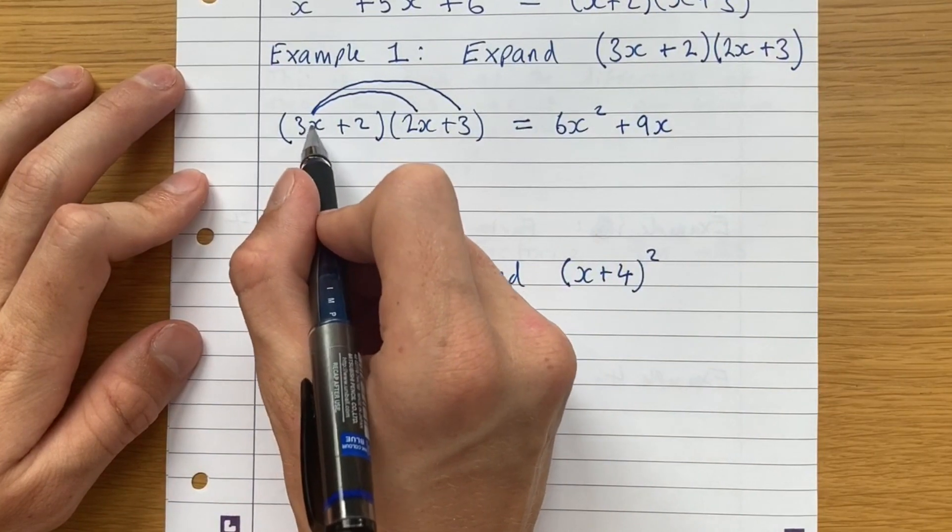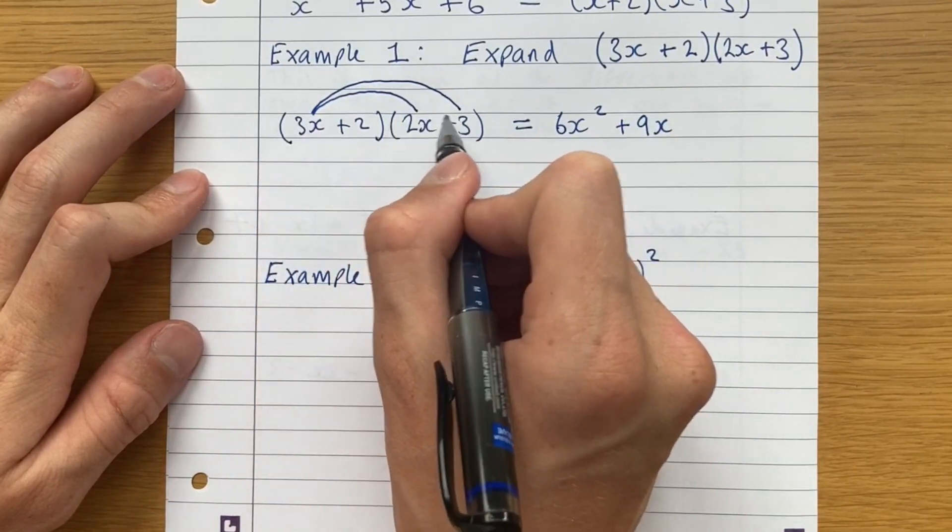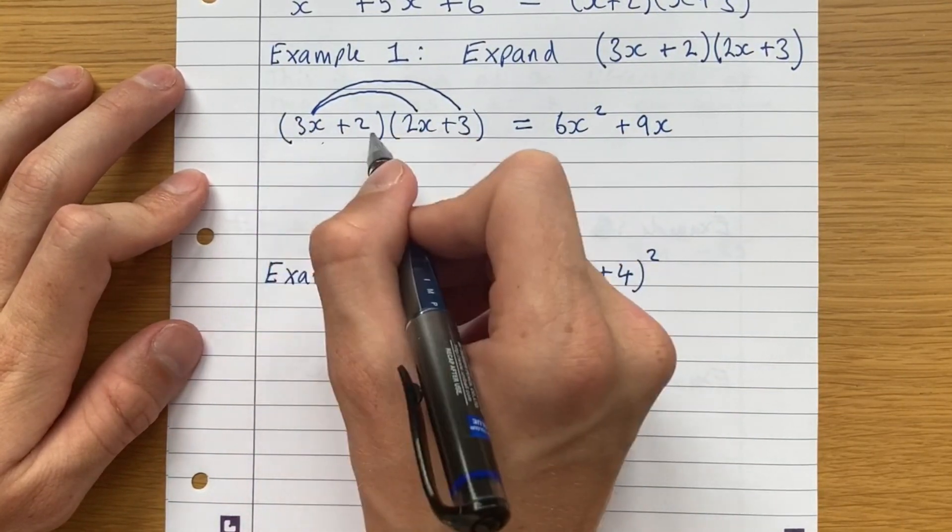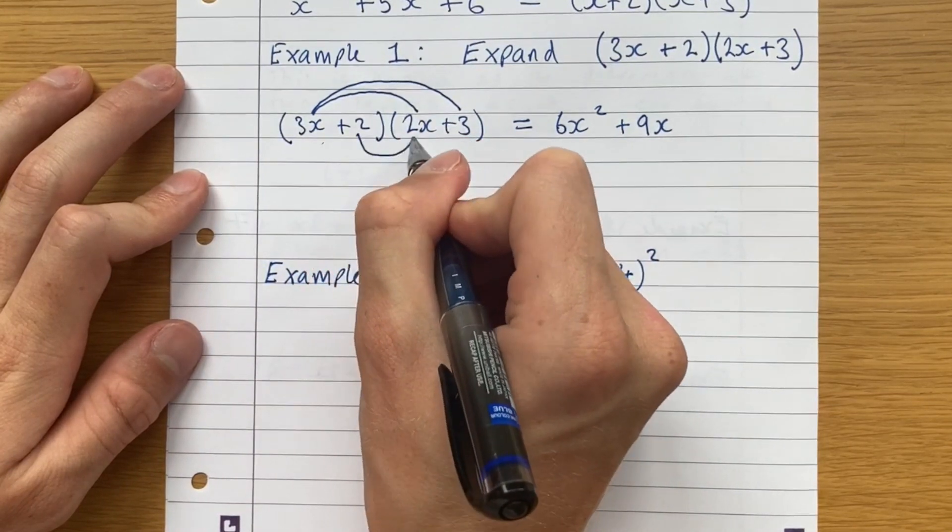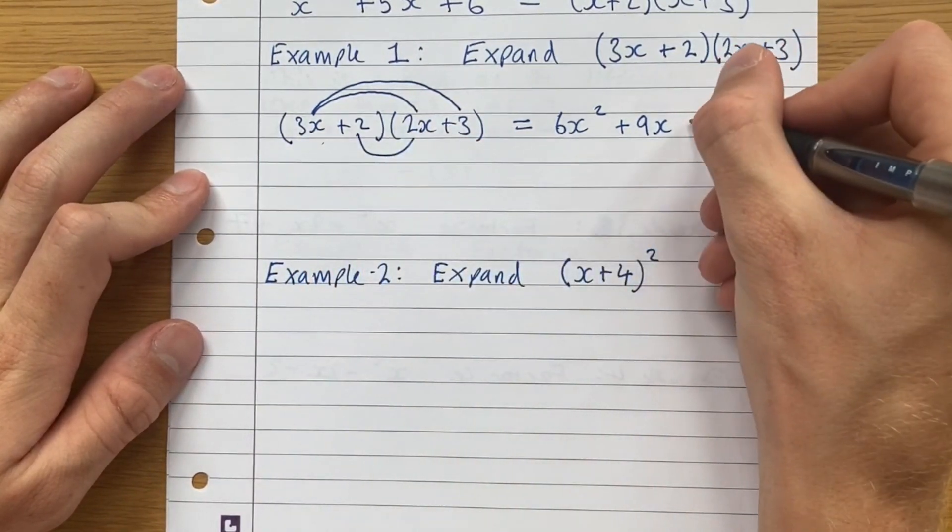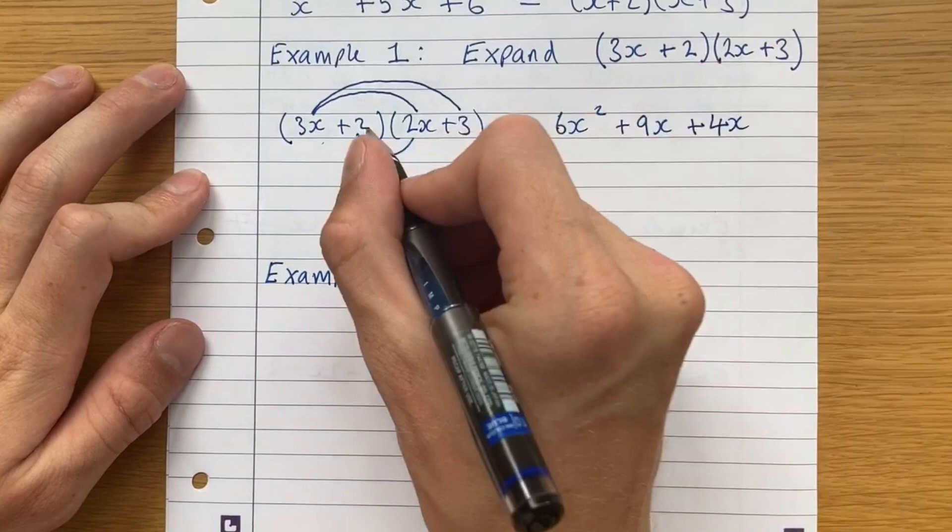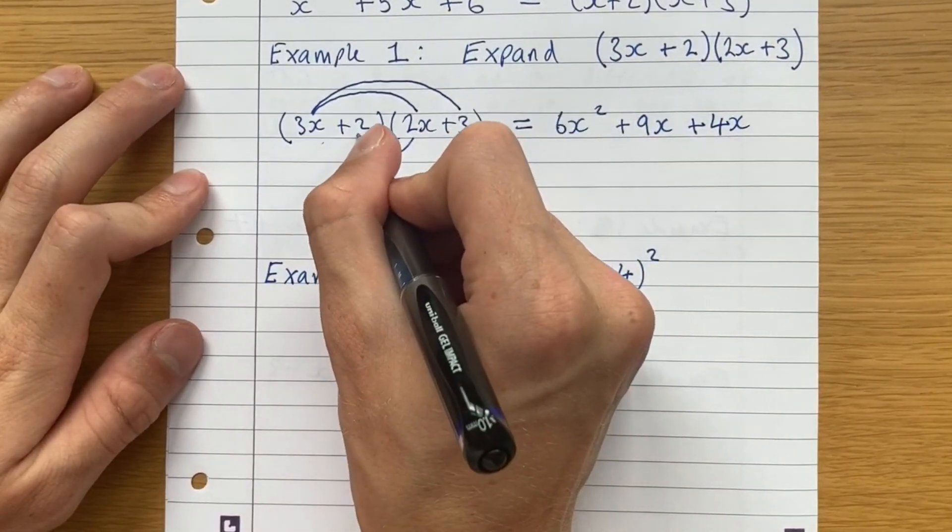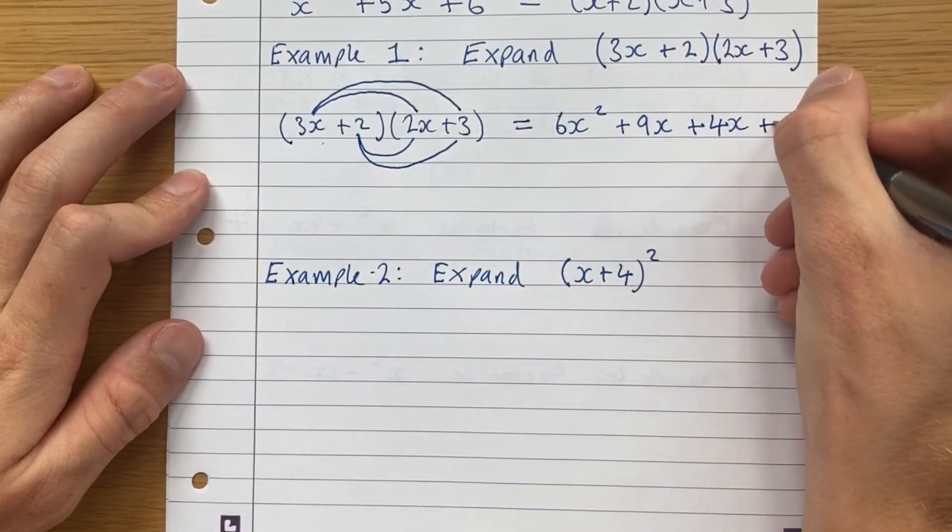So again, this has now been multiplied by both terms in this bracket, so we can move on from this to the 2. So starting here, it doesn't matter which order you do it in. 2 times 2x is 4x. And finally, 2 times 3 is 6.